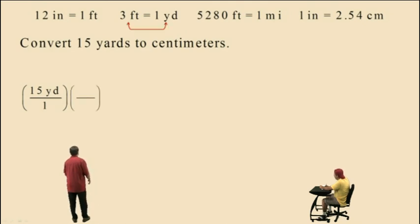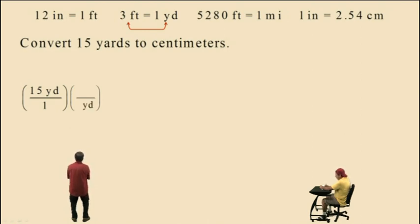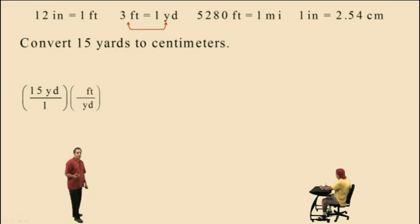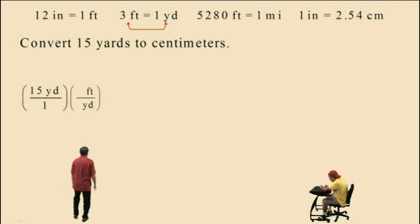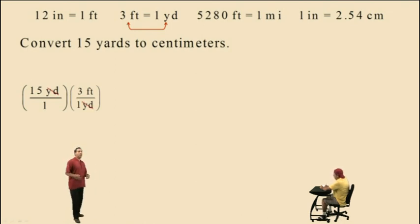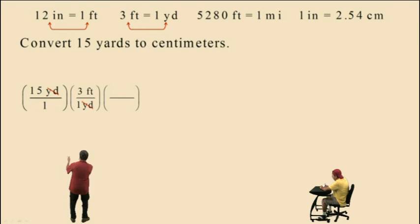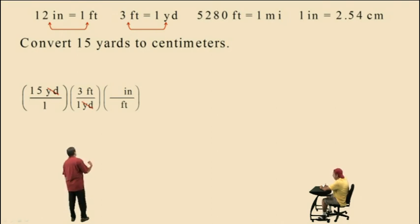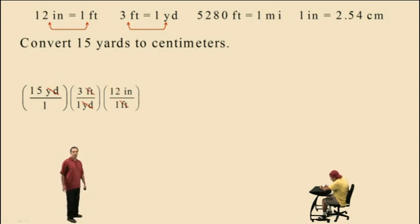Now we bring in our first conversion factor, which is going to convert yards to feet. Notice we put yards on the bottom, feet on the top. Our conversion factor requires numeric values representing the ratio of feet to yards — and the ratio of feet to yards is 3 to 1. Notice dimensions of yards cancel and we are now in feet. Our next conversion factor is going to convert feet to inches using the equivalent relationship 12 inches equals 1 foot. Notice we put feet on the bottom, inches on the top. We require the ratio of inches to feet, and that ratio is 12 to 1. Notice the dimensions of feet cancel, leaving us with inches.